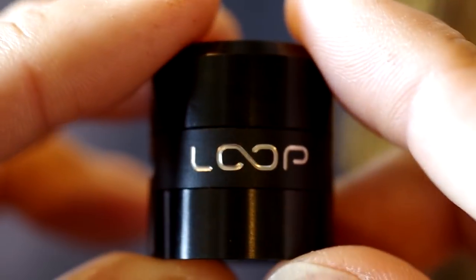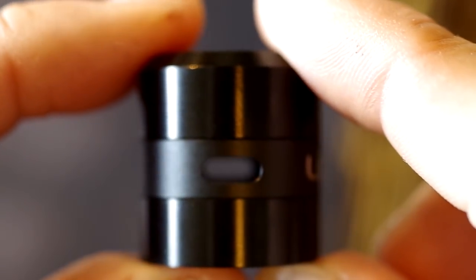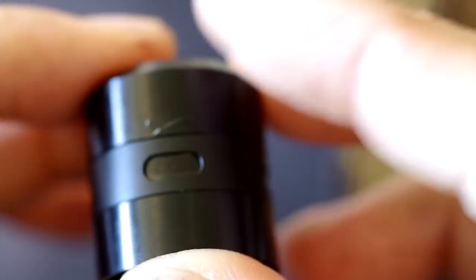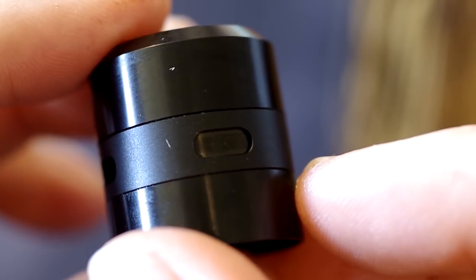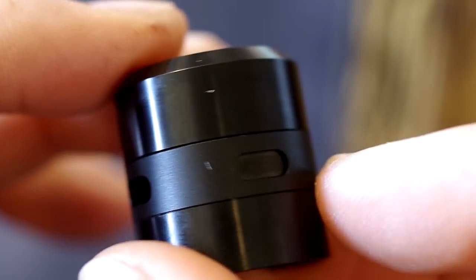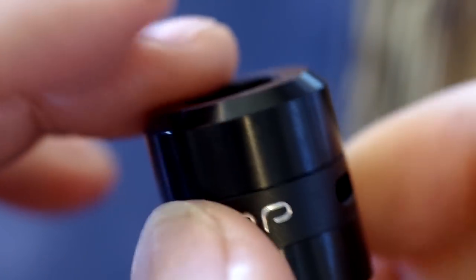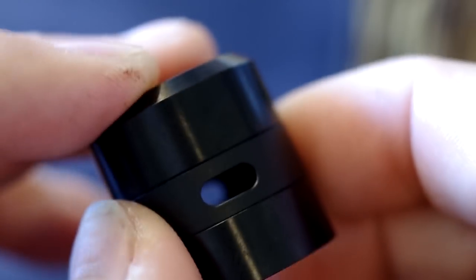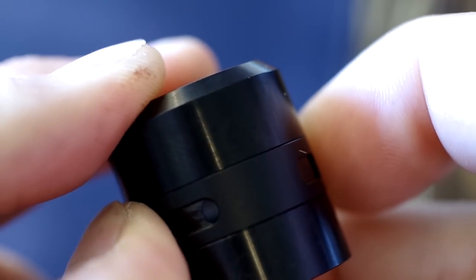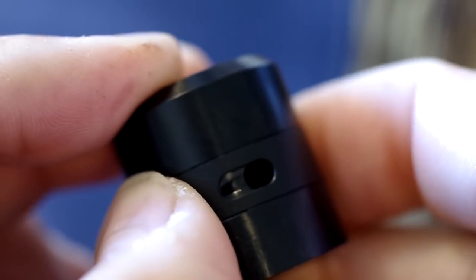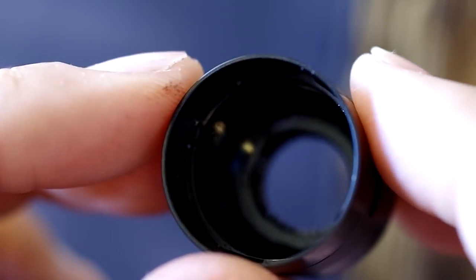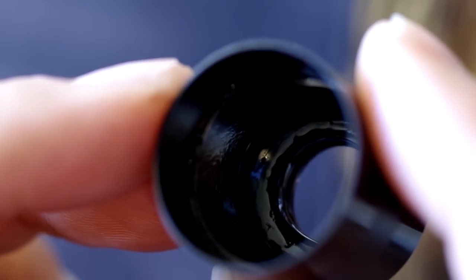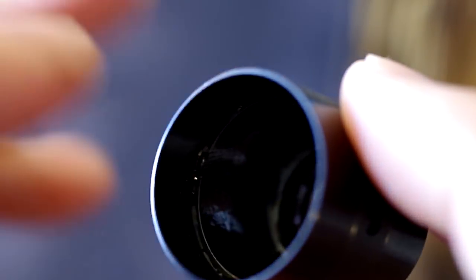The cap is a standard 810. Let's first look at the barrel. You have a side through and through airflow from both sides, and you can choose a single setting if you want to have a coil placed on only one side.